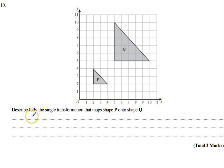In this question we're being asked to describe fully the single transformation that maps shape P onto shape Q. Our first job is to decide what kind of transformation it is. Well, shape Q is bigger than shape P and it's not the same size, so we know that it's going to be an enlargement of some description.